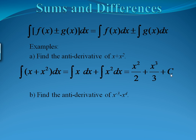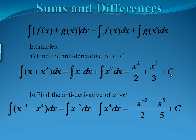Let's look at another example: find the antiderivative of x to the negative 3 minus x to the fourth. We do each piece separately since they're separated by subtraction. Be very careful with the negative exponent. When we integrate x to the negative 3, we add 1 to the power: negative 3 plus 1 is negative 2, and divide by the new power of negative 2, so we write negative x to the negative 2 over 2. Minus x to the fourth: adding 1 gives x to the fifth, divided by 5. And of course we have our plus c.